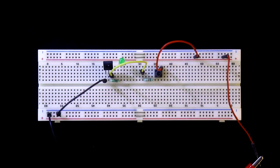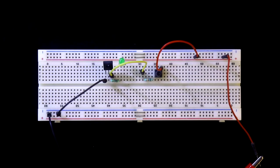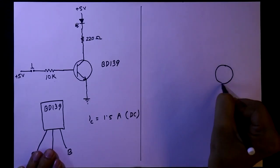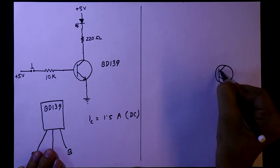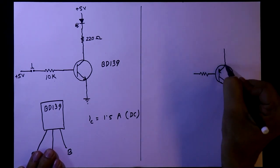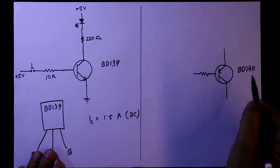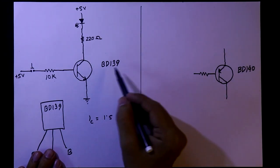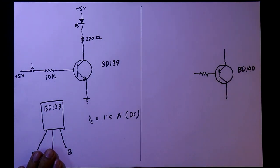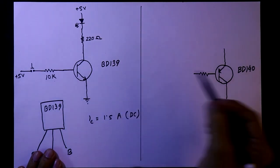Now if we want to use PNP transistor instead of this, I'll use BD140. BD140 is complementary of BD139. It is NPN and it is PNP.